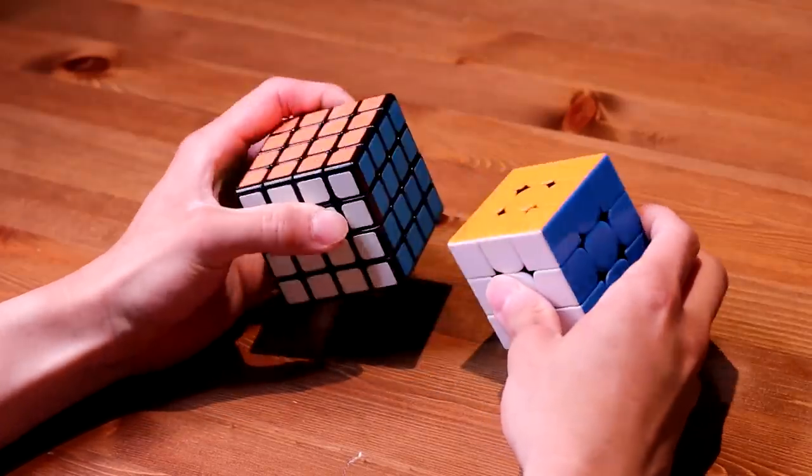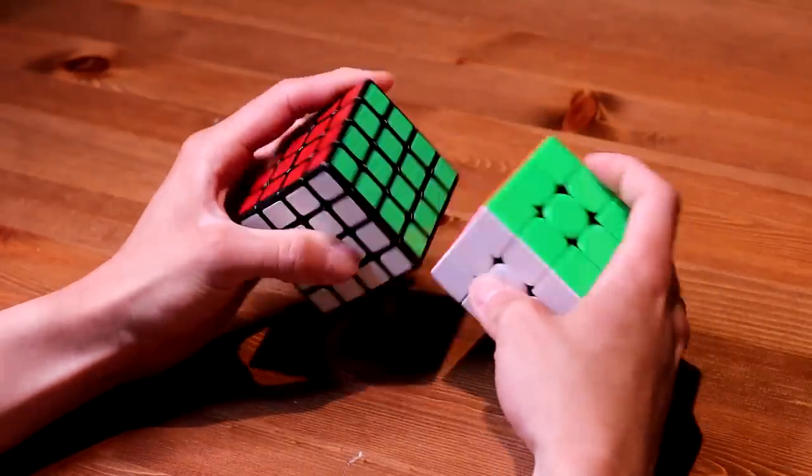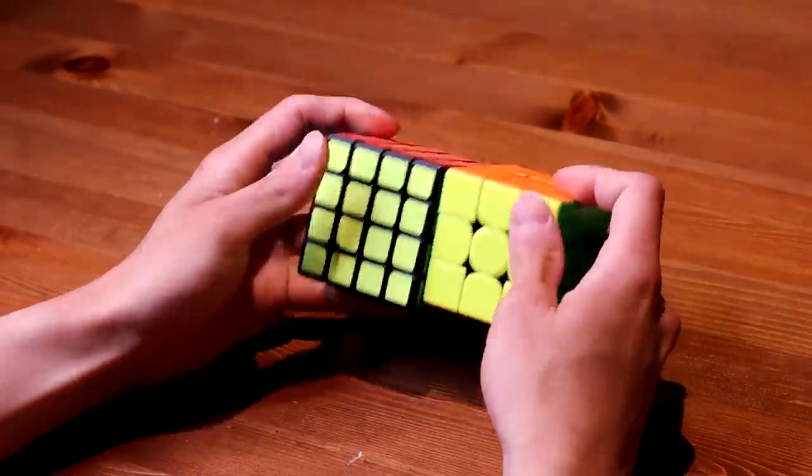Now let's get into this tutorial. Alright so just like the 3x3 there's the white, blue, orange, red, green and the yellow side.